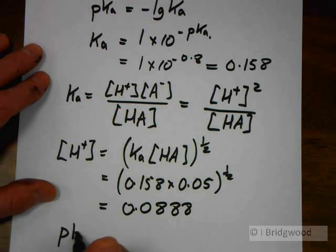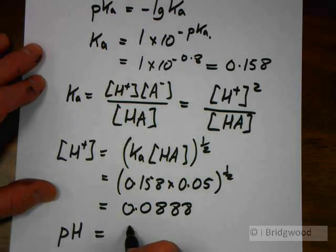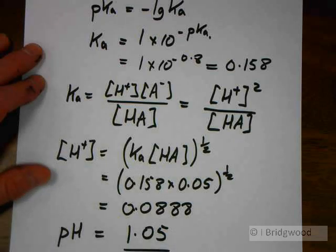pH, negative log of the concentration of hydrogen ions, 1.05 to two decimal places.